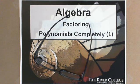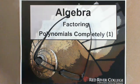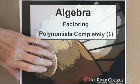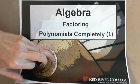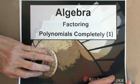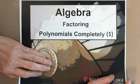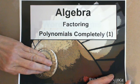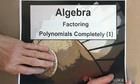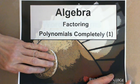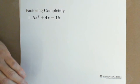Welcome to Wise Guys Factoring Polynomials Completely Part 1. To factor polynomials completely means sometimes we have a common factor, or we can have different polynomials — sometimes two terms, sometimes three terms, sometimes four terms. Let's look at the examples.